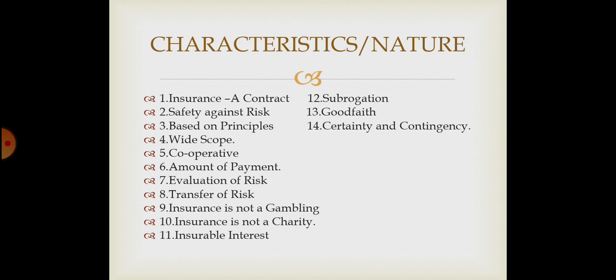The risk shifts from the insured to the insurer — that is safety against risk. The risk may be risk of life or other types of risk. Basically the parties get protection and safety, which can cover life, property, or material. This method is to reduce risk based on principles. Insurance is based on different types of principles: utmost good faith, insurable interest, proximate cause, and subrogation. These principles automatically apply to the insurance contract.